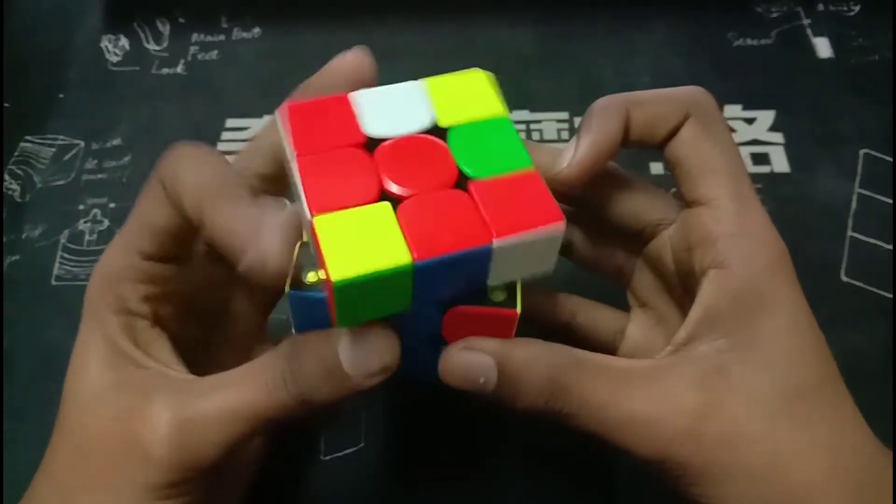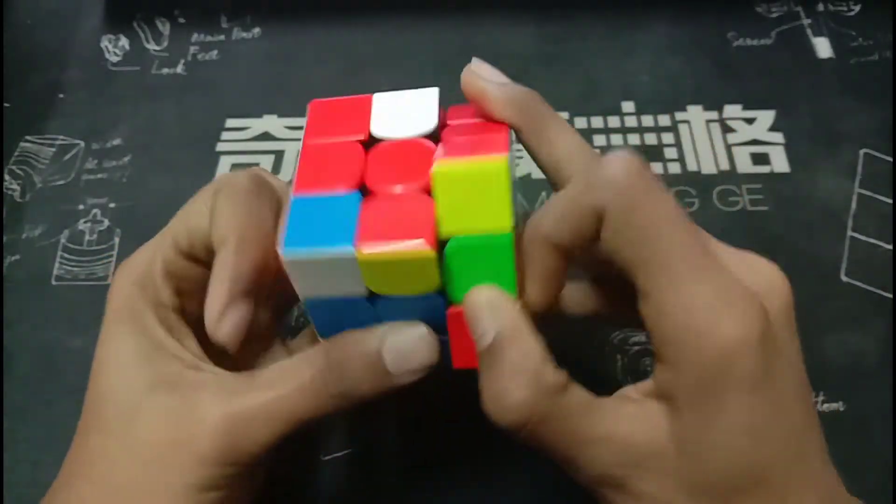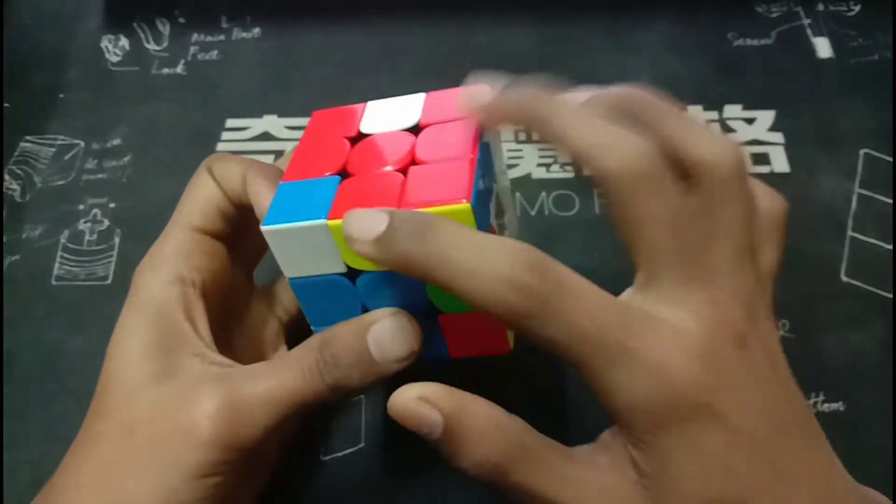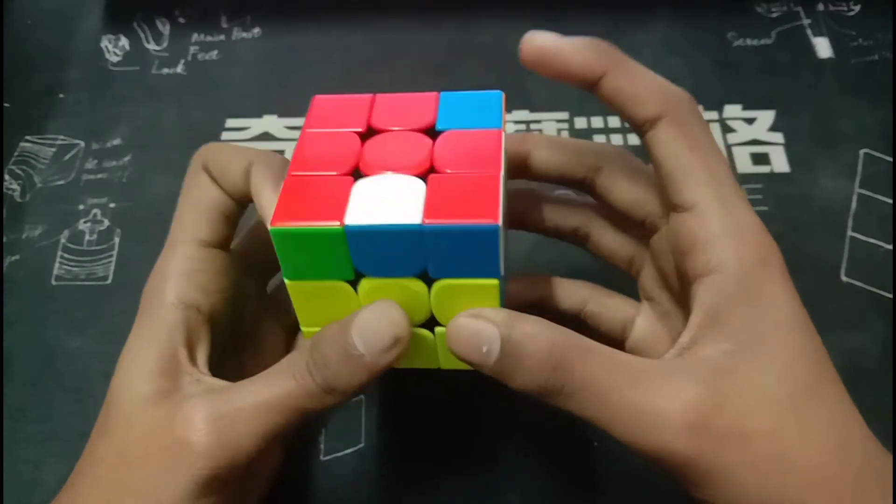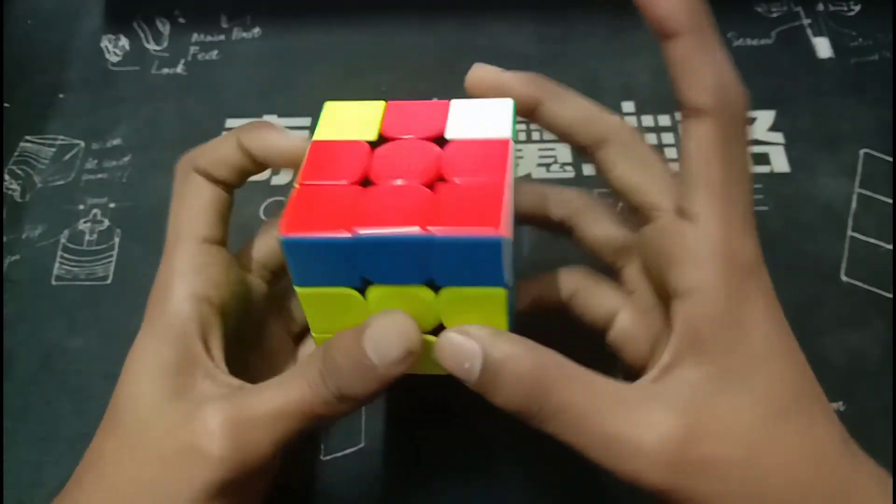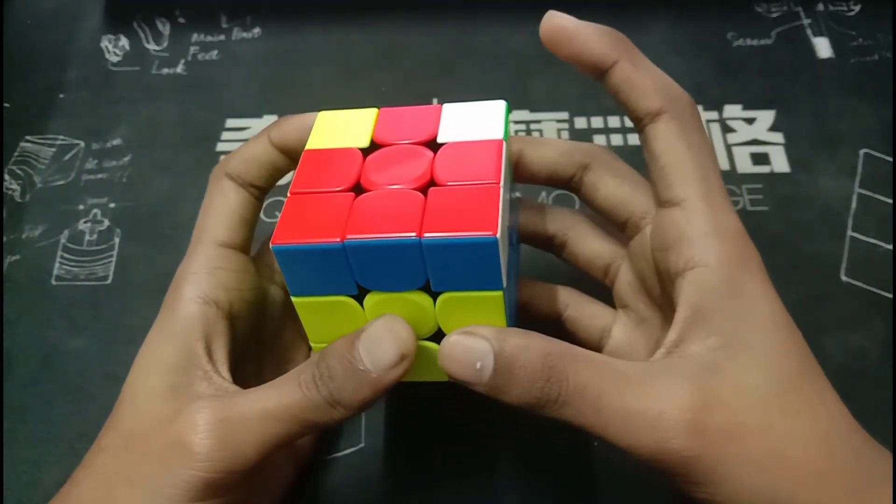For the fourth pair, he first does a U2, does this insert to make this block right here, then rotates and inserts this pair, which gives him a very, very easy ZBLL.